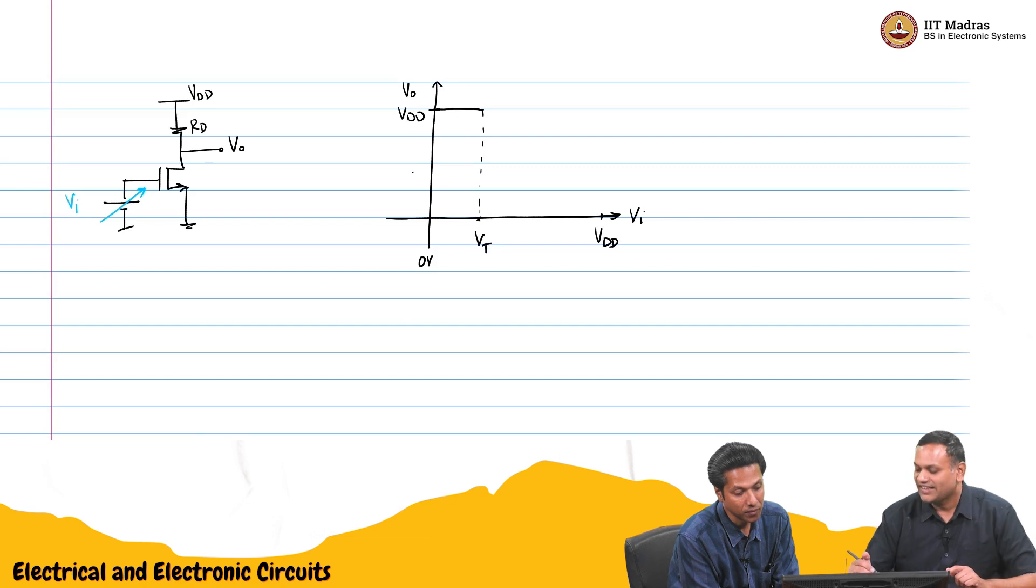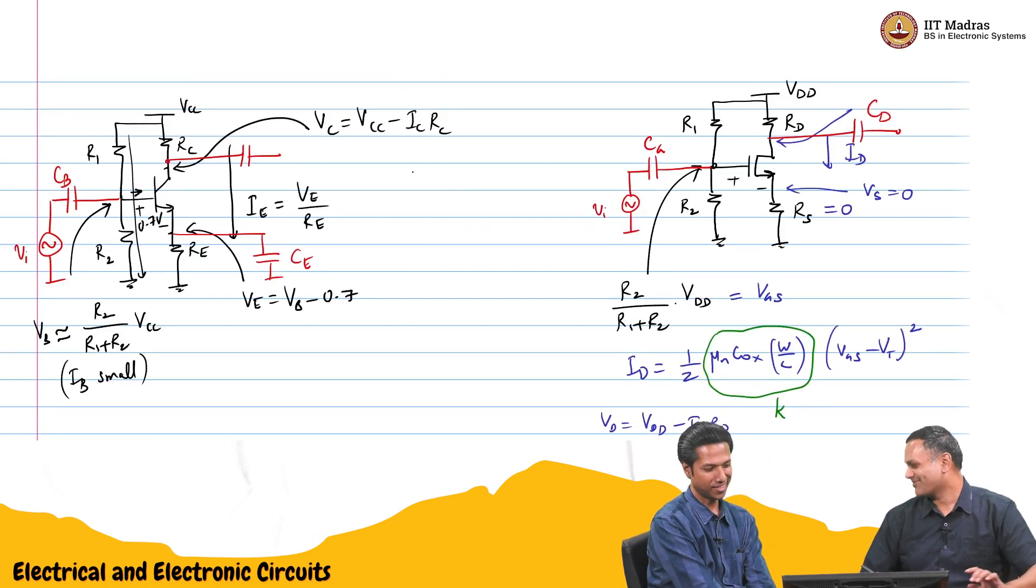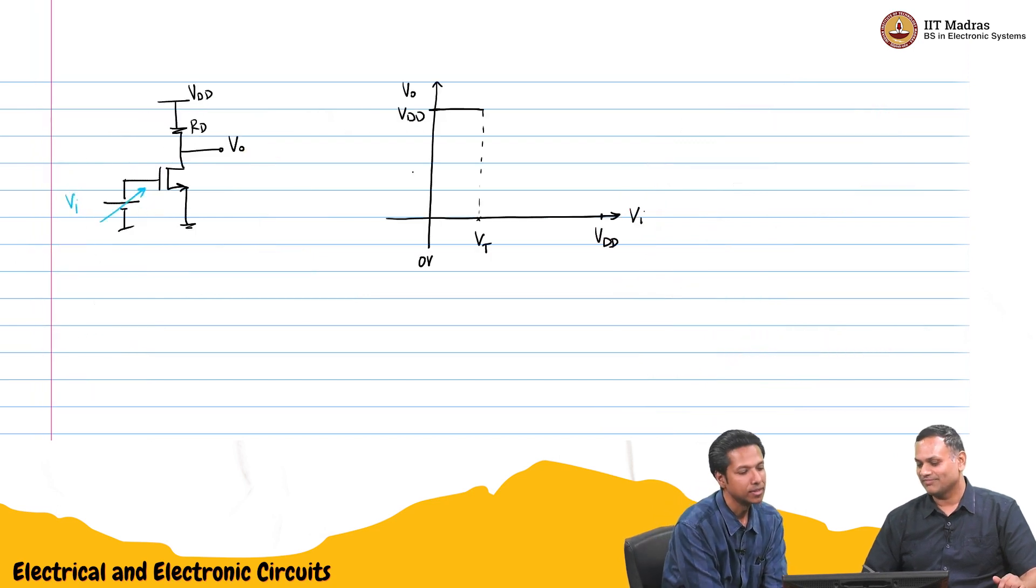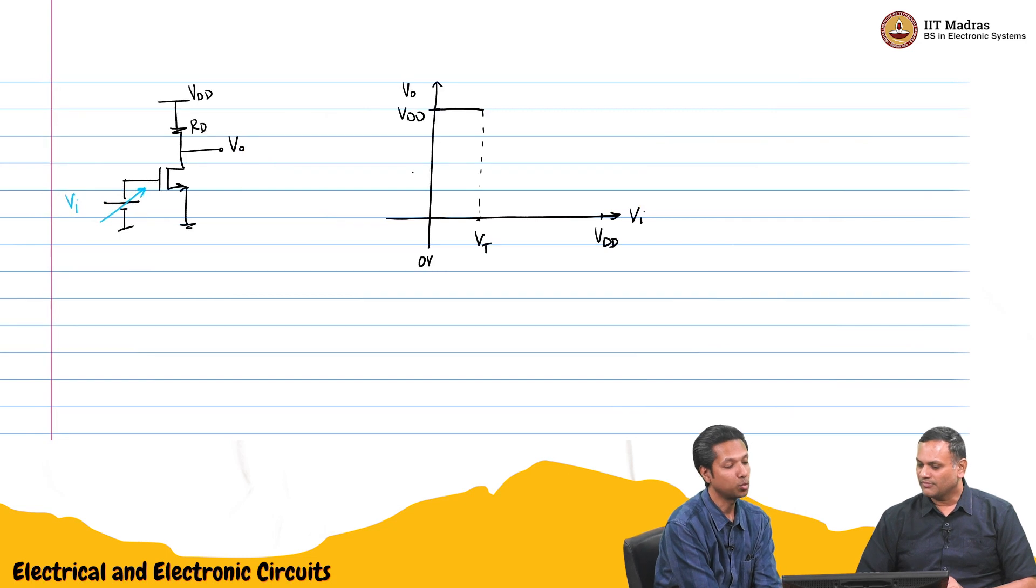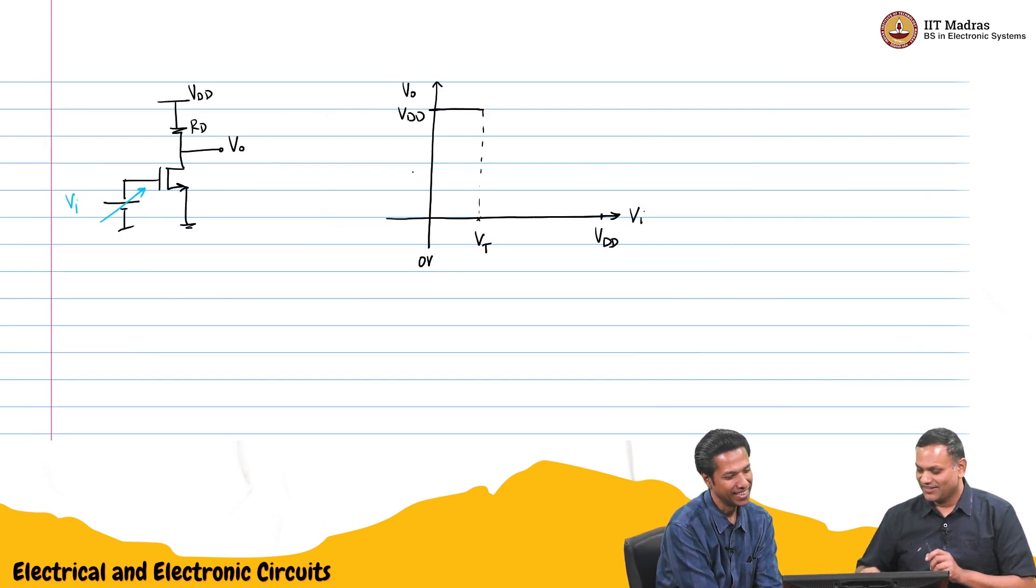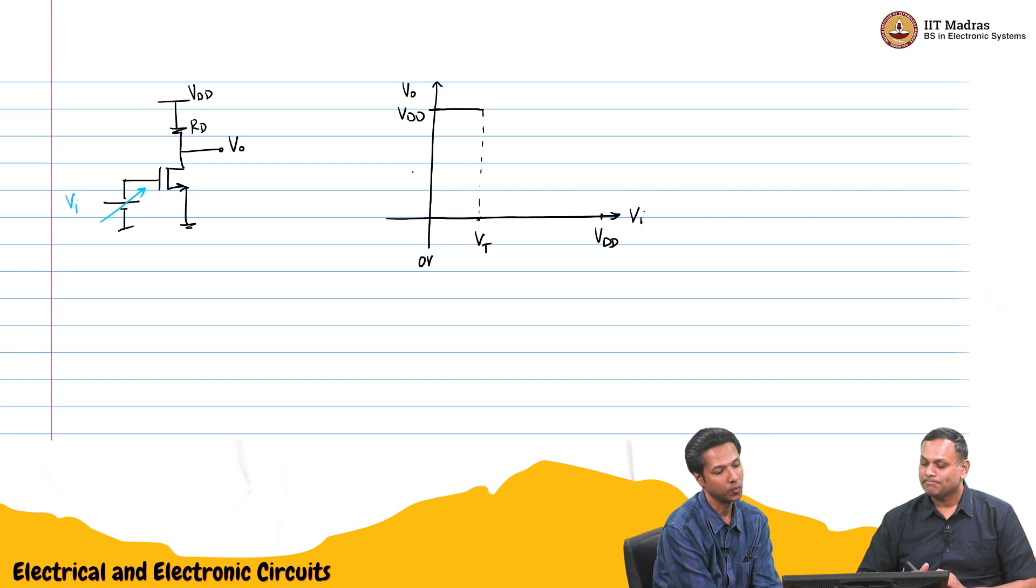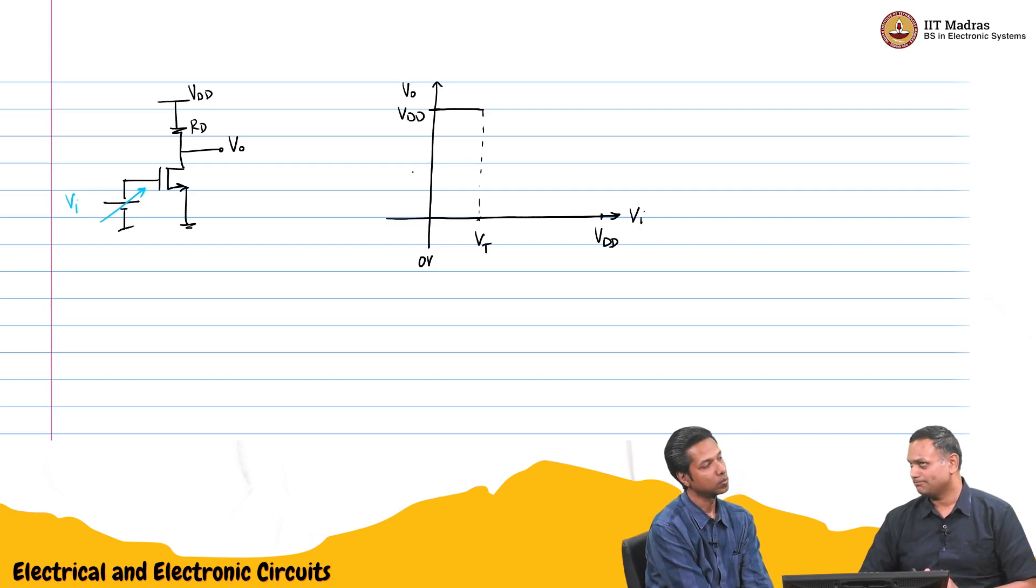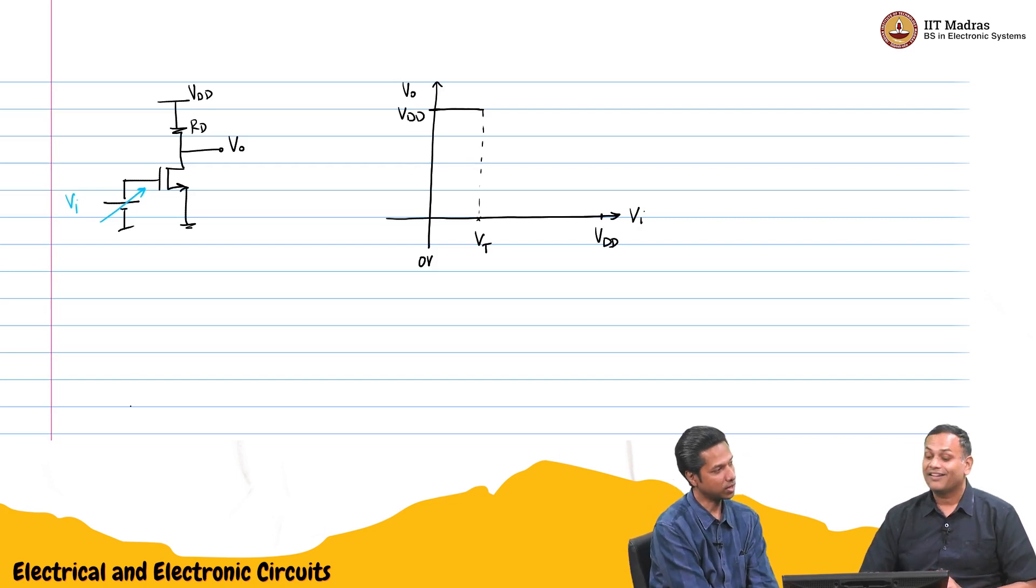I think in the case of the NPN there was a small current. Correct. When the output is high it is clean. Now, if the input goes beyond, above Vt, the transistor can start conducting.